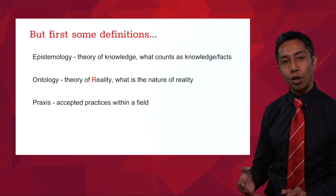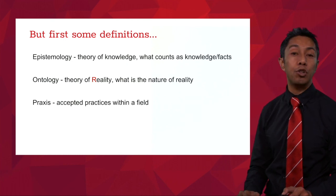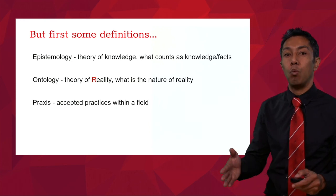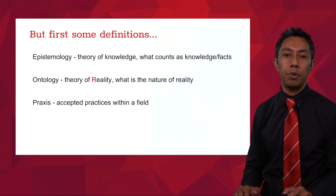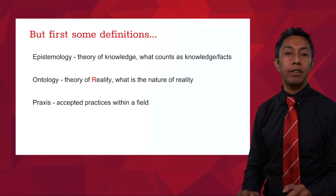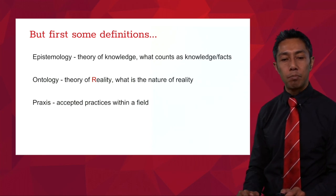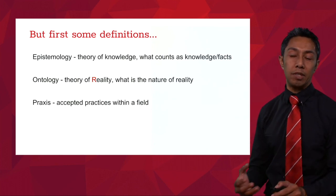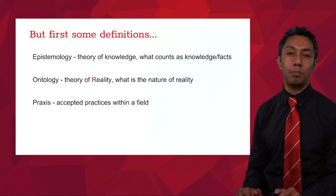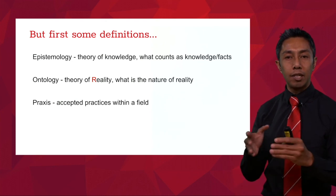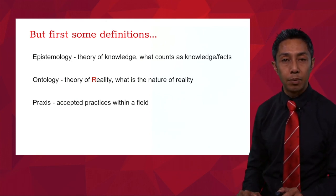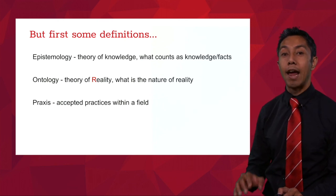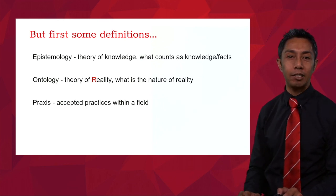When we talk about the ontology of a particular field, we're talking about the theory of reality — what constitutes reality, what is reality and what is not. The last term we need to define is praxis, or the accepted practices within the field. Science has particular practices, mathematics has particular practices. Each key field of endeavour that we have as humans has particular methods that they employ, and we're going to be talking about those in relation to science today.